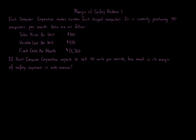Margin of safety problem one. Fruit Computer Corporation makes custom fruit-shaped computers and is currently producing 40 computers per month. Data: sales price per unit $900, variable cost per unit $470, fixed costs per month $13,760. If Fruit Computer Corporation expects to sell 40 units per month, how much is its margin of safety expressed in sales revenue?